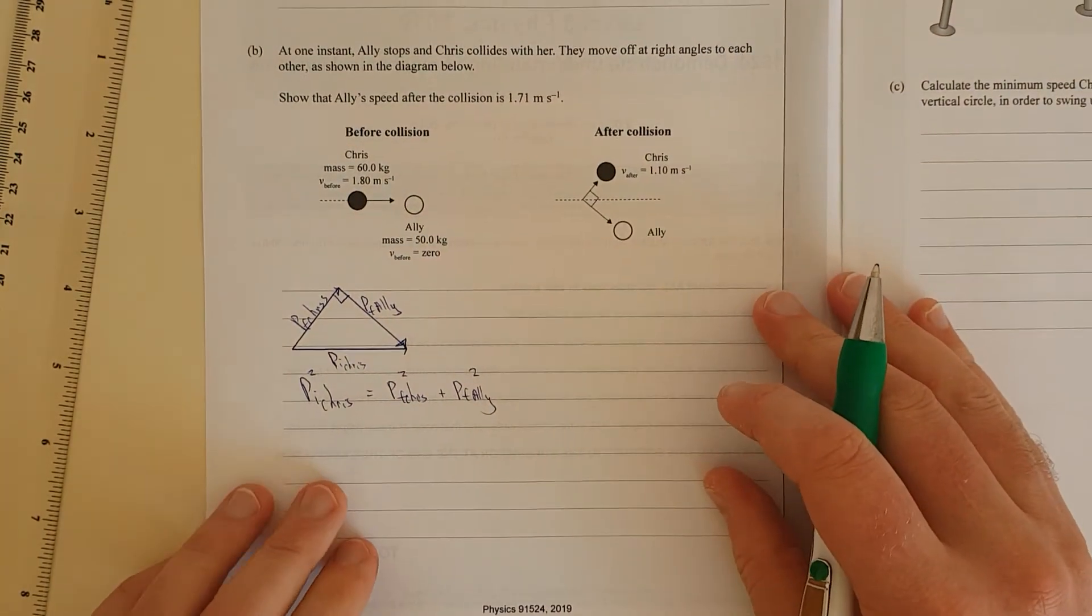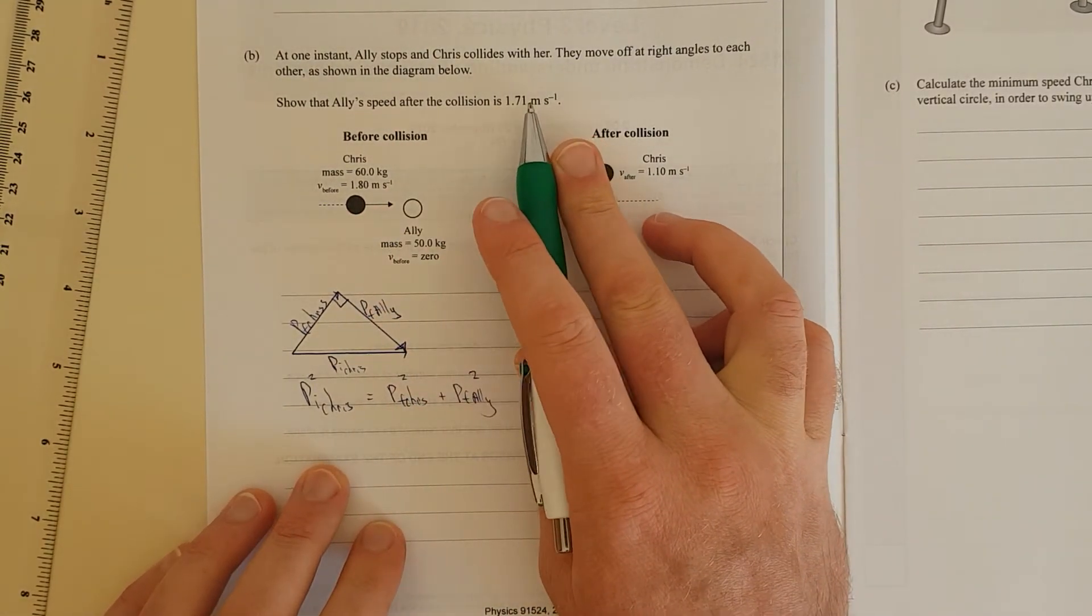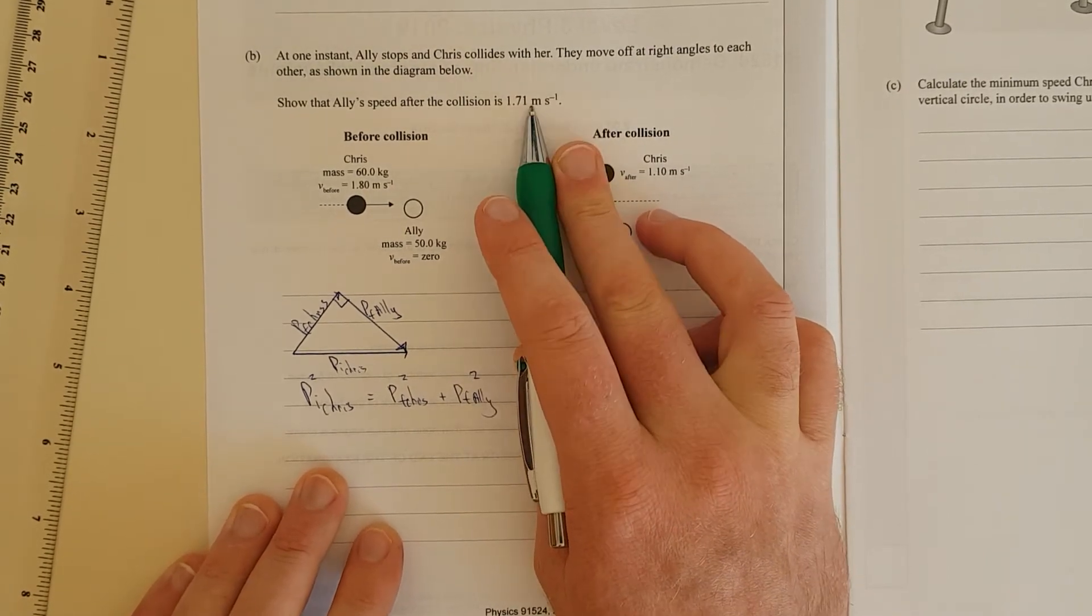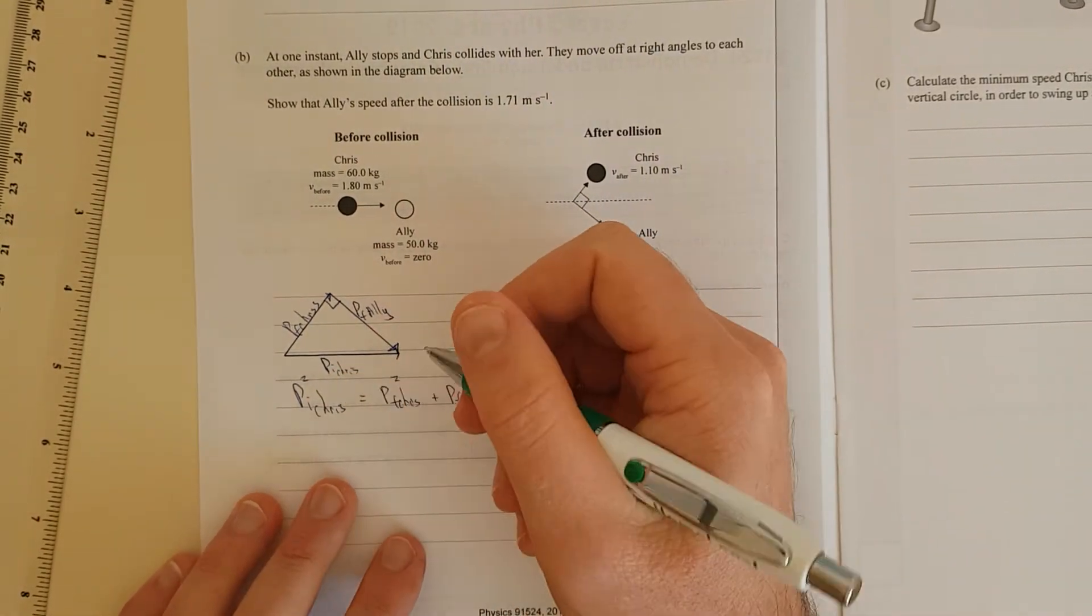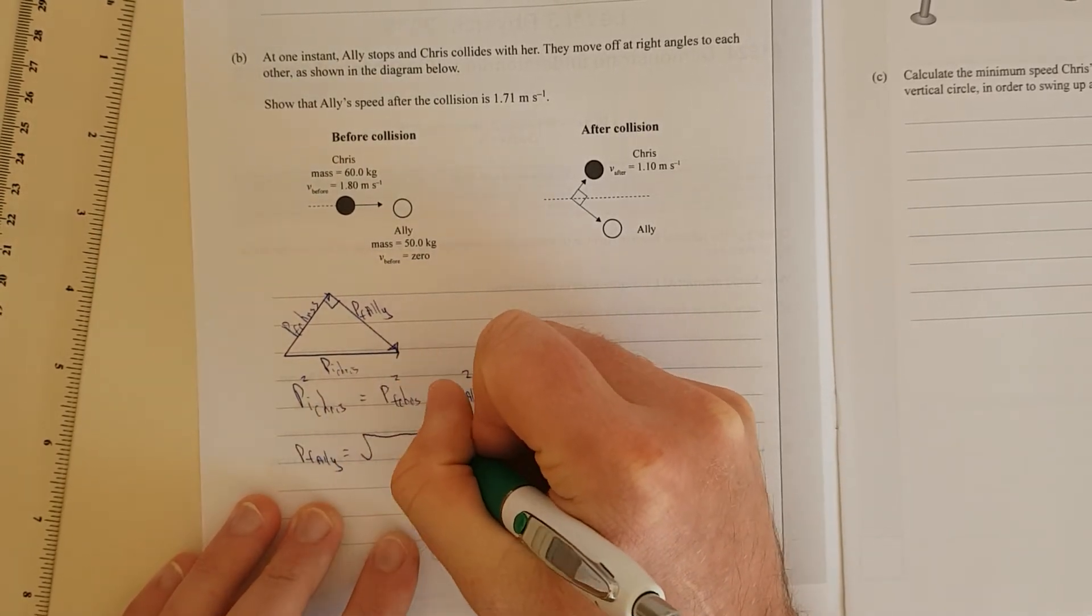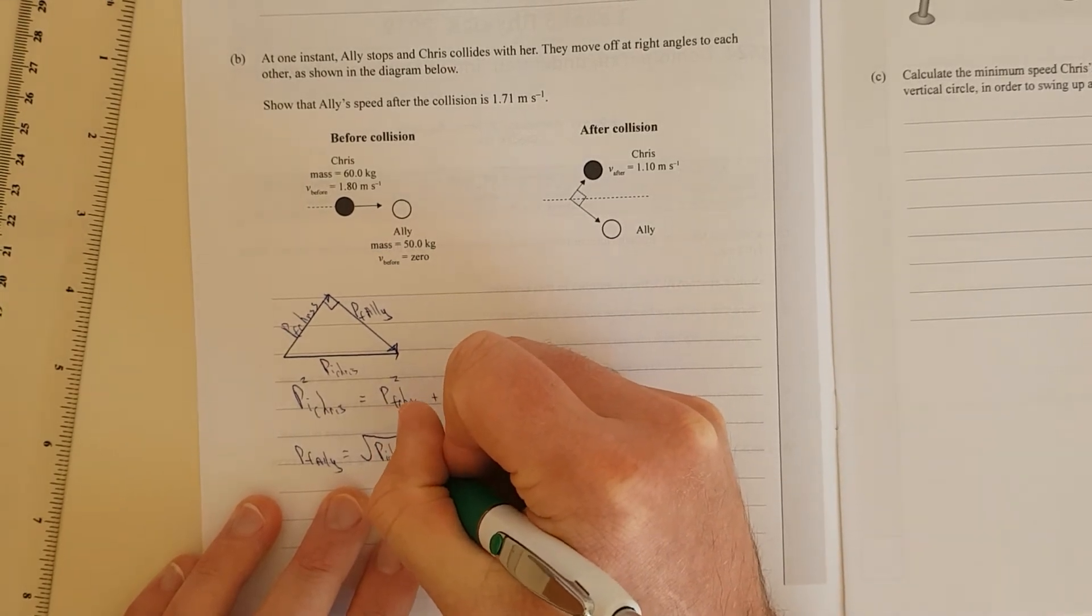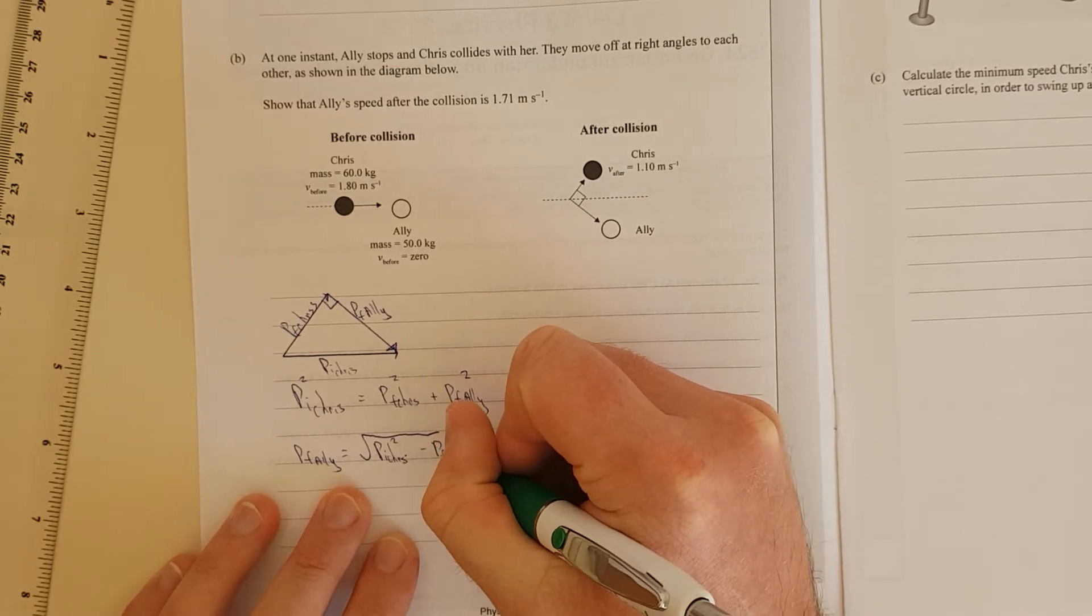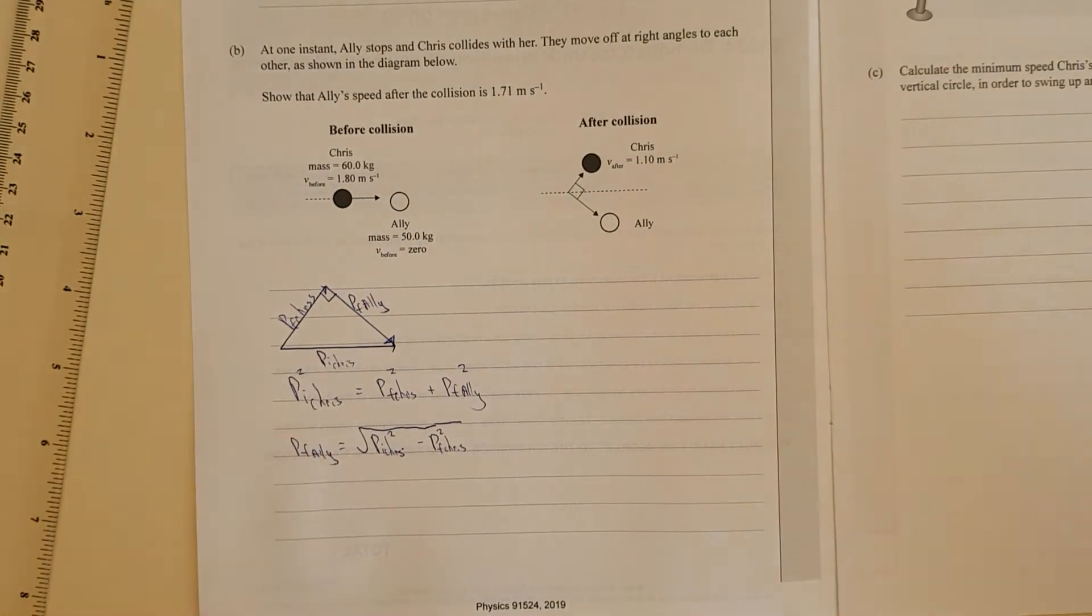All we need to do is rearrange. We're trying to find the speed of Ali, so we need to find the momentum and then divide by mass to get her velocity or speed. Momentum final of Ali is going to be equal to the square root of—let's rearrange Pythagoras—p initial Chris squared minus p final Chris squared.